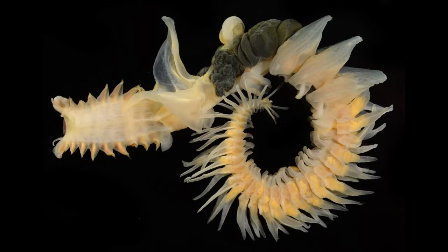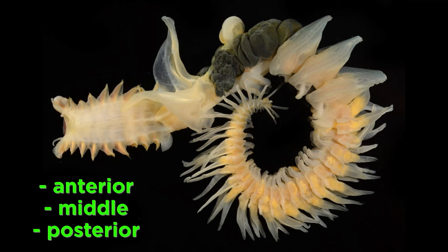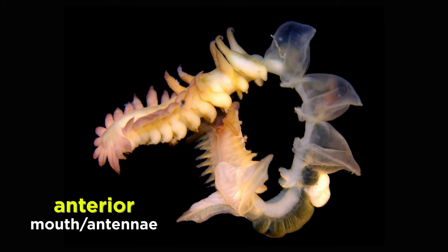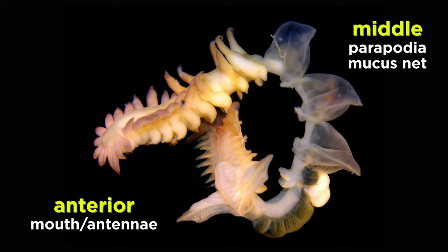They are highly adapted to their tubes and come in a range of forms. They are segmented and regionally specialized, with highly modified appendages on different segments for forming the tunnel, feeding, or creating suction for the flow of water through the tube. They are divided into anterior, middle, and posterior body sections. The anterior section contains the mouth and sensory antennae, while the middle section contains highly modified wing-like parapodia that secrete and support a mucus net utilized in suspension feeding, with fan-like structures that beat rhythmically to cause a current so that food moves into the tube.